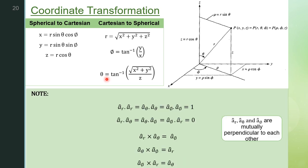The three mutually perpendicular unit vectors in spherical are ar-cap, aθ-cap, and aφ-cap. The dot product between two identical unit vectors is 1; between different unit vectors it is 0. For cross products: ar-cap × aθ-cap = aφ-cap, aθ-cap × aφ-cap = ar-cap — that is, it follows cyclic permutation. Thus we have established a relation between the three coordinate systems: Cartesian, cylindrical, and spherical.